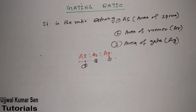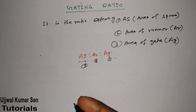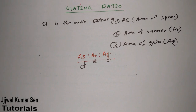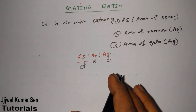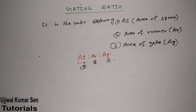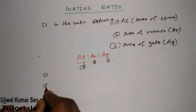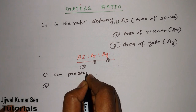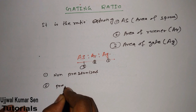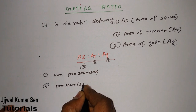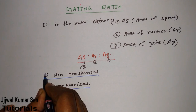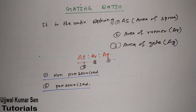If you have done experiments on casting, then you can remember this without using any tips because you know the process. Now there are two types of gating ratio: one is non-pressurized and another one is pressurized.